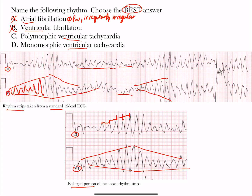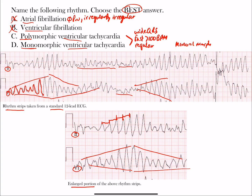So not A-fib or V-fib. Of the two remaining choices, C or D — monomorphic or polymorphic — what is the difference? Mono means one morphology. Both of these are fast rhythms, over 100 beats per minute, and they're regular with wide QRS complexes — that's what makes ventricular tachycardia. What differentiates the two is morphology. Monomorphic has one morphology, whereas polymorphic has greater than one morphology. Do all the QRS complexes here look the same? Clearly they don't, so monomorphic V-tach is not the answer.